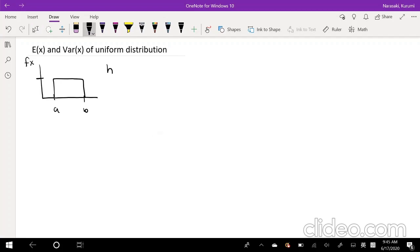So even though we don't know the height, we'll just call it height. The height times the base, because this is a rectangle, height times base, which is our base is b minus a, has to add up to 1. That means our height is equal to 1 over b minus a. And this is actually our probability distribution as well.